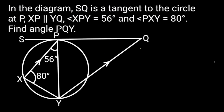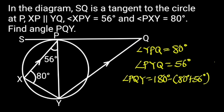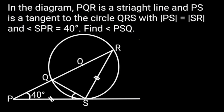In the diagram, SQ is a tangent to the circle at P, XP is parallel to YQ. Angle XPY equals 56 degrees and angle PXY equals 80 degrees. Find angle PQY. Angle YPQ equals 80 degrees. Reason: Angle in alternate segment. Angle PYQ equals 56 degrees. Reason: Alternate angles. Angle PQY equals 180 degrees minus (80 degrees plus 56 degrees), which gives 44 degrees.